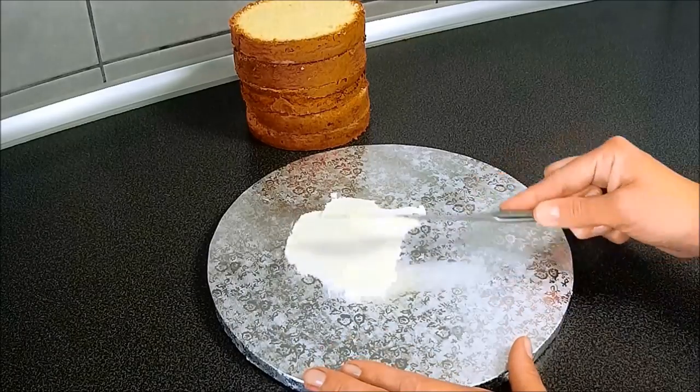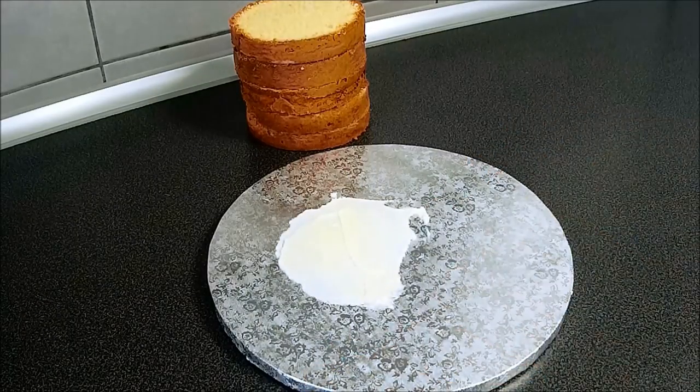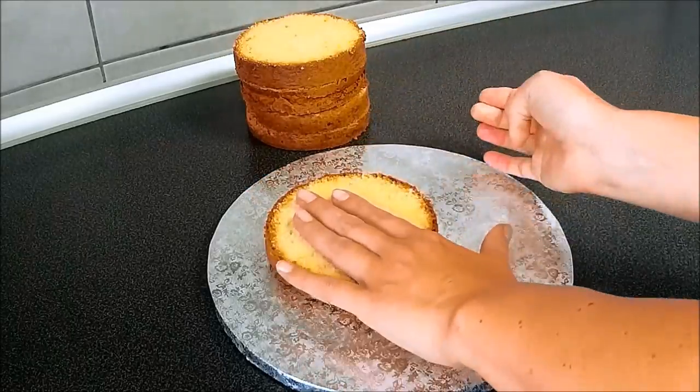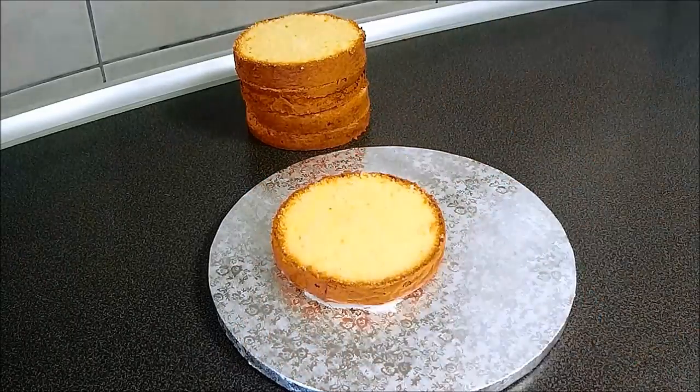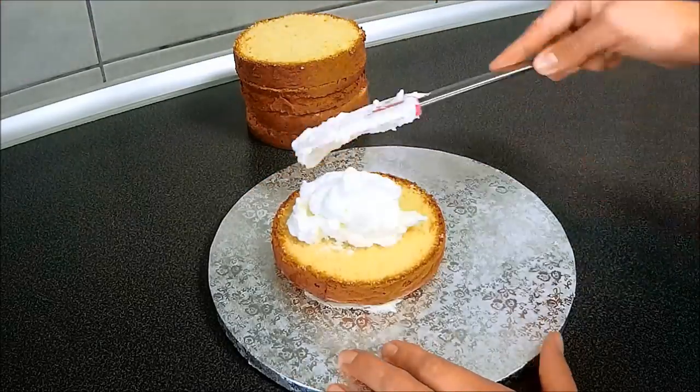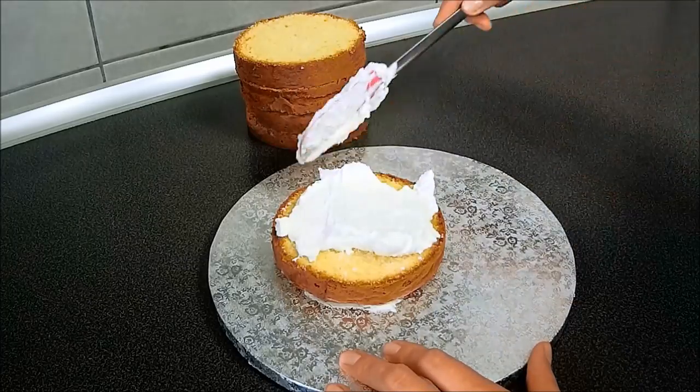Instead of spreading some buttercream on your cake board, I'm putting it a little bit on the side of the cake board and sticking your first layer of your cake. I have 5 layers of 5 inch cake, and I'm going to fill them in with cream.